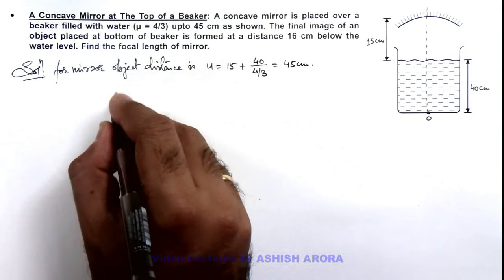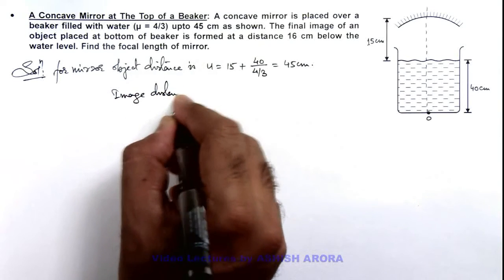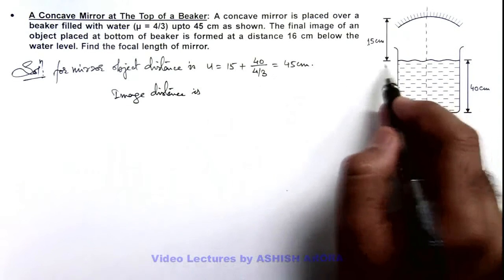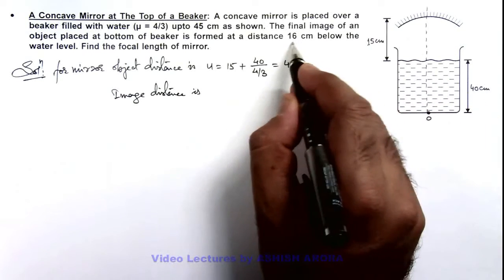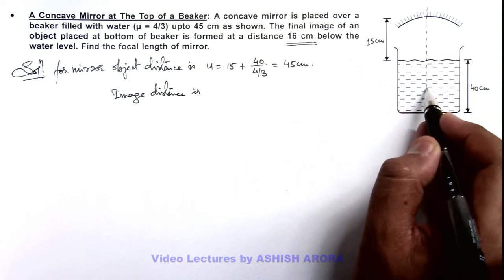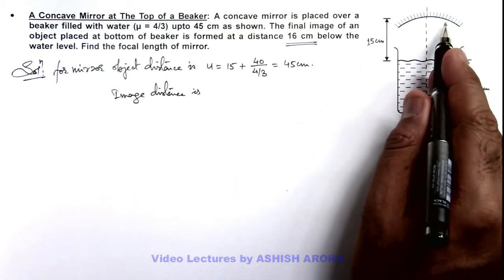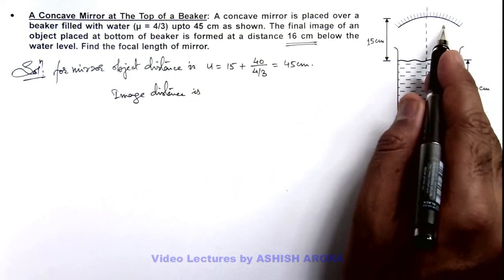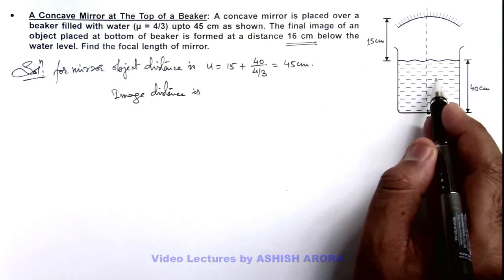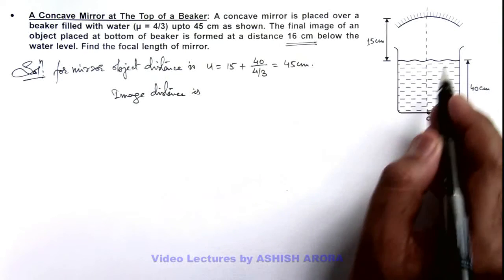And similarly if we calculate the image distance from mirror, here it is 15 plus, it is saying the image is produced at a distance 16 centimeter below the water level below the water surface, that means actually the light rays which are reflected from mirror going into the water will be at a position 16 by mu distance from the water surface.